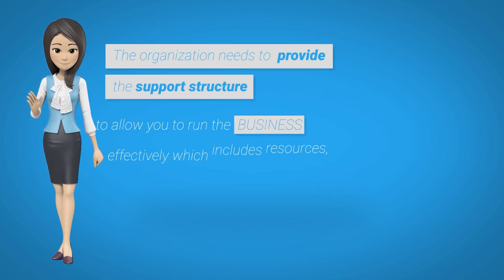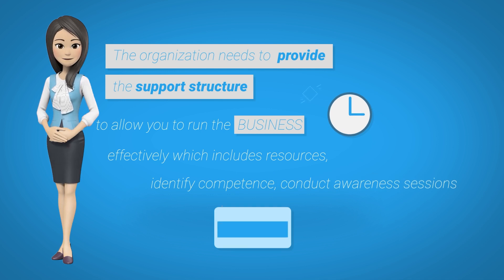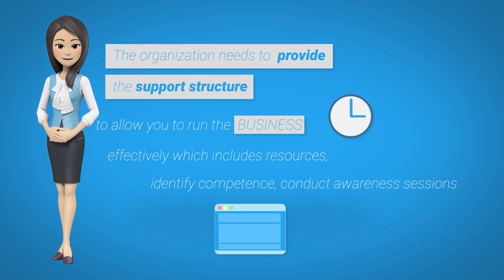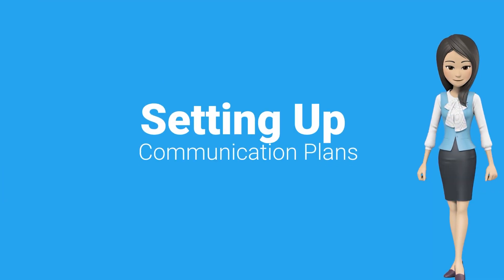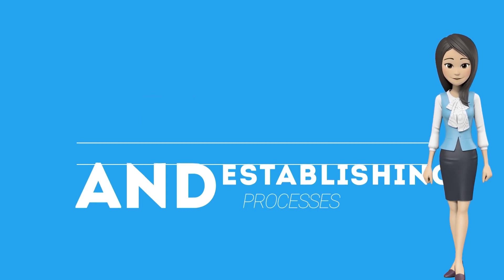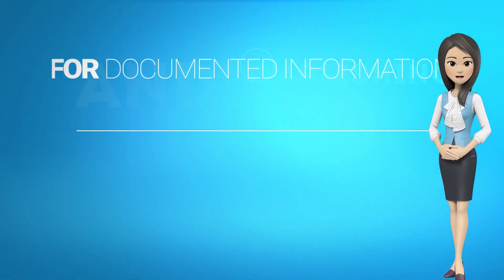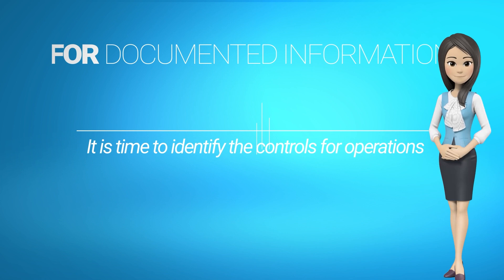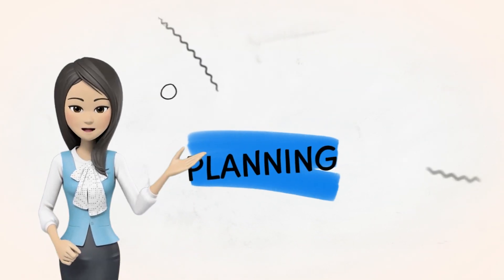Clause 7 — Support: The organization needs to provide the support structure to allow you to run the business effectively. This includes resources, identifying competence, conducting awareness sessions, setting up communication plans, and establishing processes for documented information.